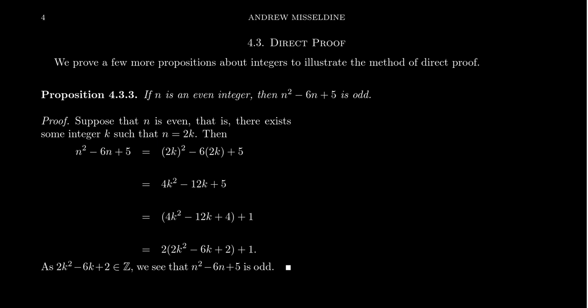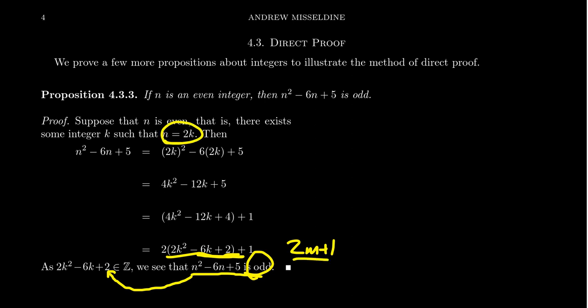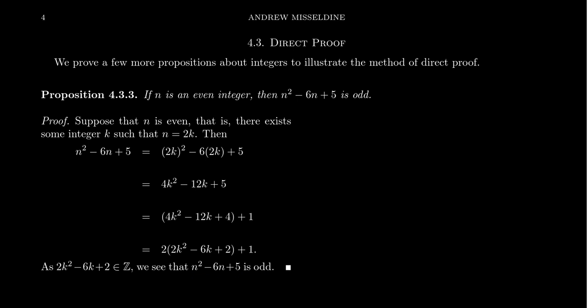If you were writing this, you would think: I'm going to end this proof by writing that n squared minus 6n plus 5 is odd. What does it mean to be odd? It means there is some way of writing the number as 2m plus 1. So we have n equals 2k and we want to end up with something of the form 2m plus 1. The strategy is: take the expression n squared minus 6n plus 5, replace each n with 2k, and use algebraic manipulation to produce something of the form 2 times m plus 1.